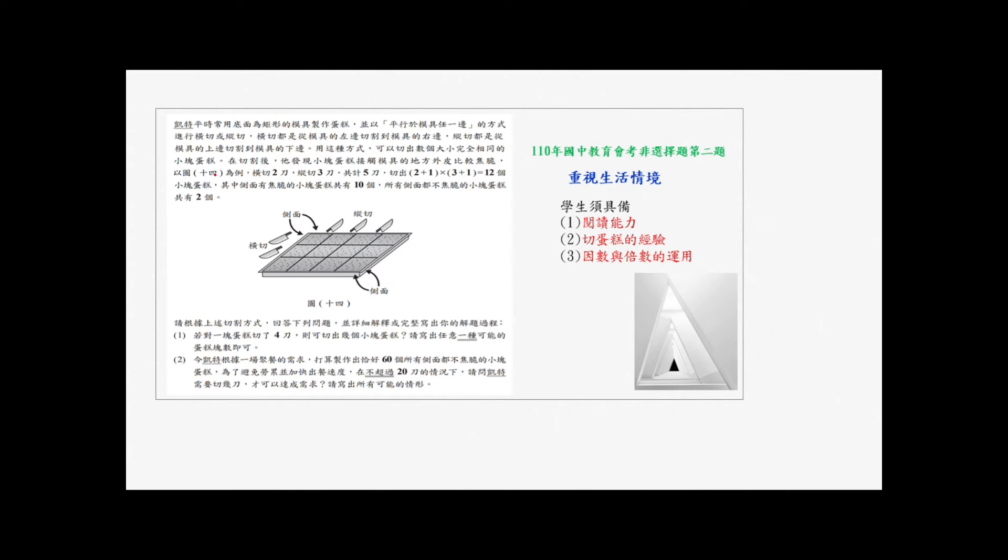这是第一小题。接下来看非选的第二题,这也是重视生活情境的题目。我们先看一下题目,凯特平时常用底面为矩形的模具制作蛋糕,并以平行于模具任意边的方式进行横切或竖切。横切都是从模具的左边切割到模具的右边,那竖切都是从模具的上边切割到模具的下边。